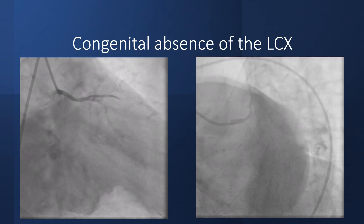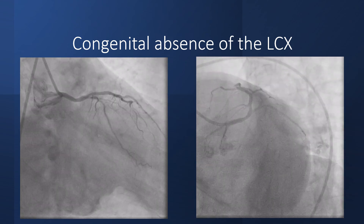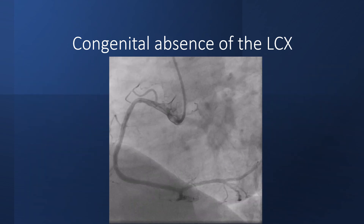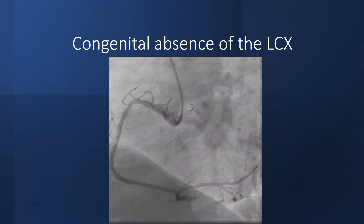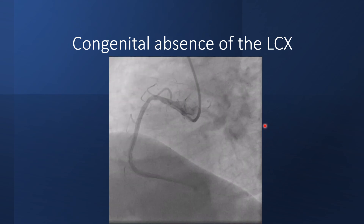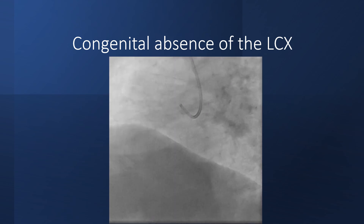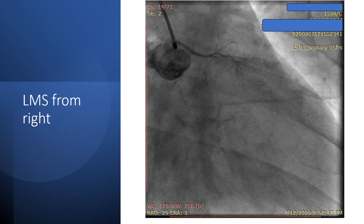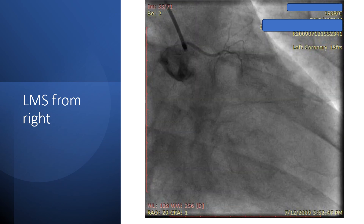The case shows a long left main stem with absence of the circumflex. One would expect the circumflex to be arising anomalously from the right sinus or from the right coronary artery. However, engagement of the RCA didn't show the usual anomalous circumflex, but instead showed a super dominant RCA where the PLV continues upward to supply the area of the circumflex — the posterolateral area. Now we come to the most important anomaly, because in some variants it has clinical importance since it may be associated with the risk of sudden cardiac death.